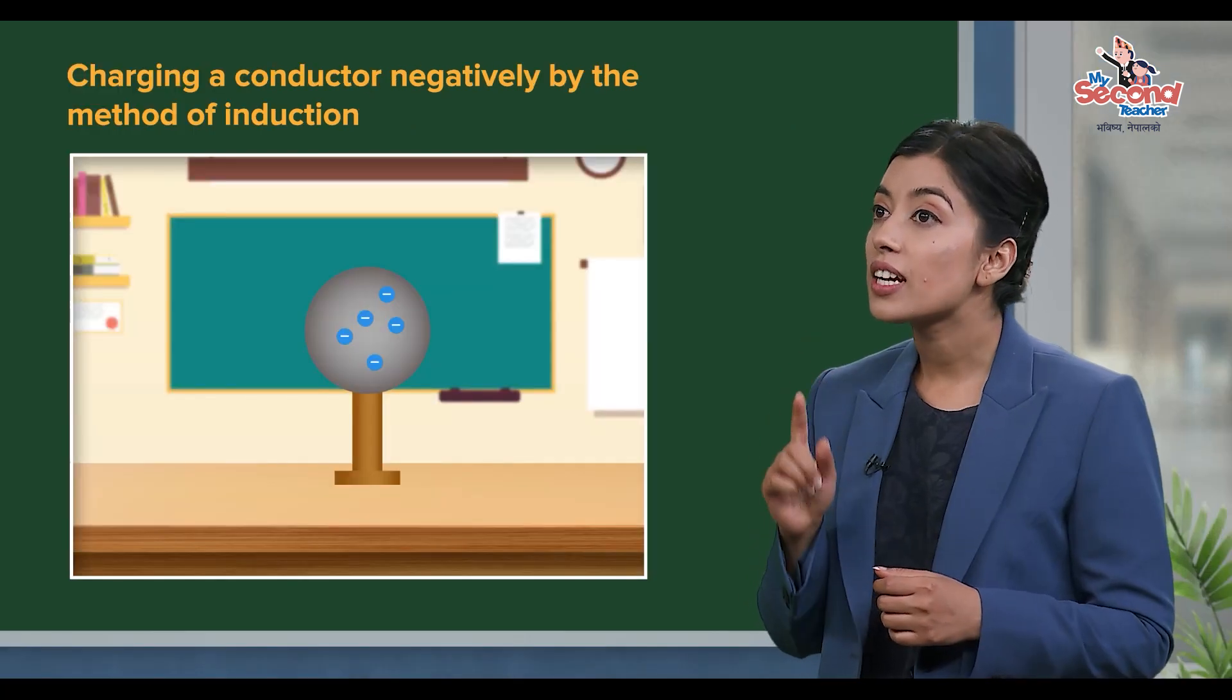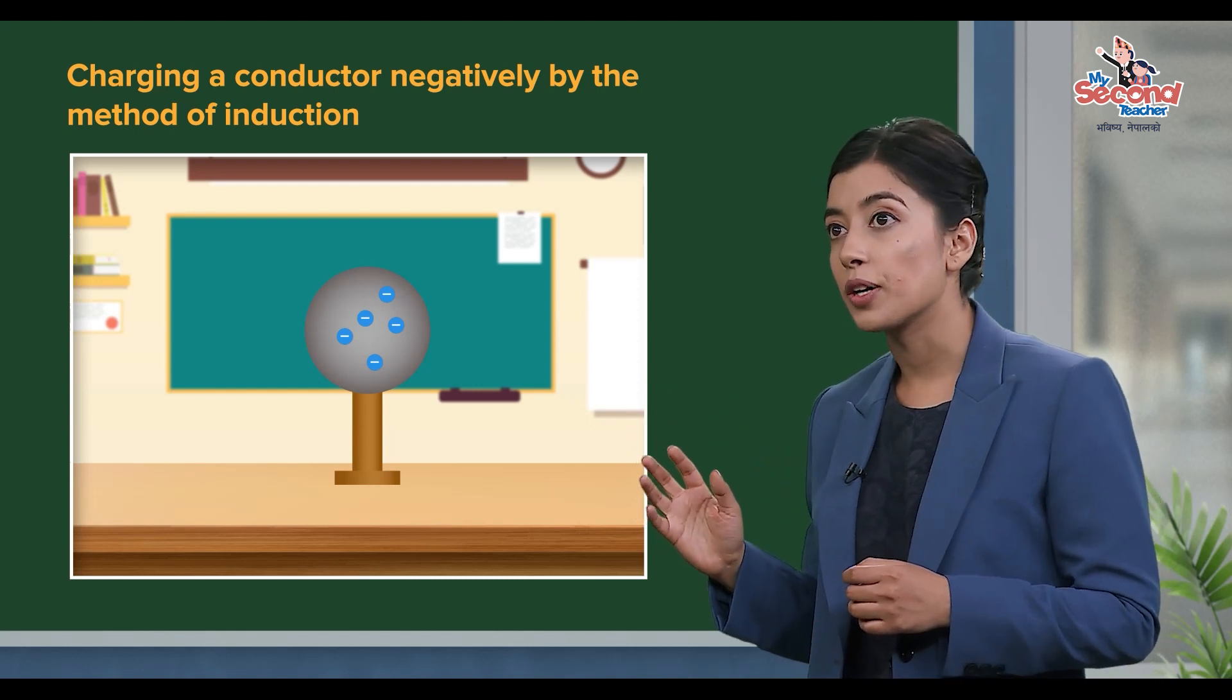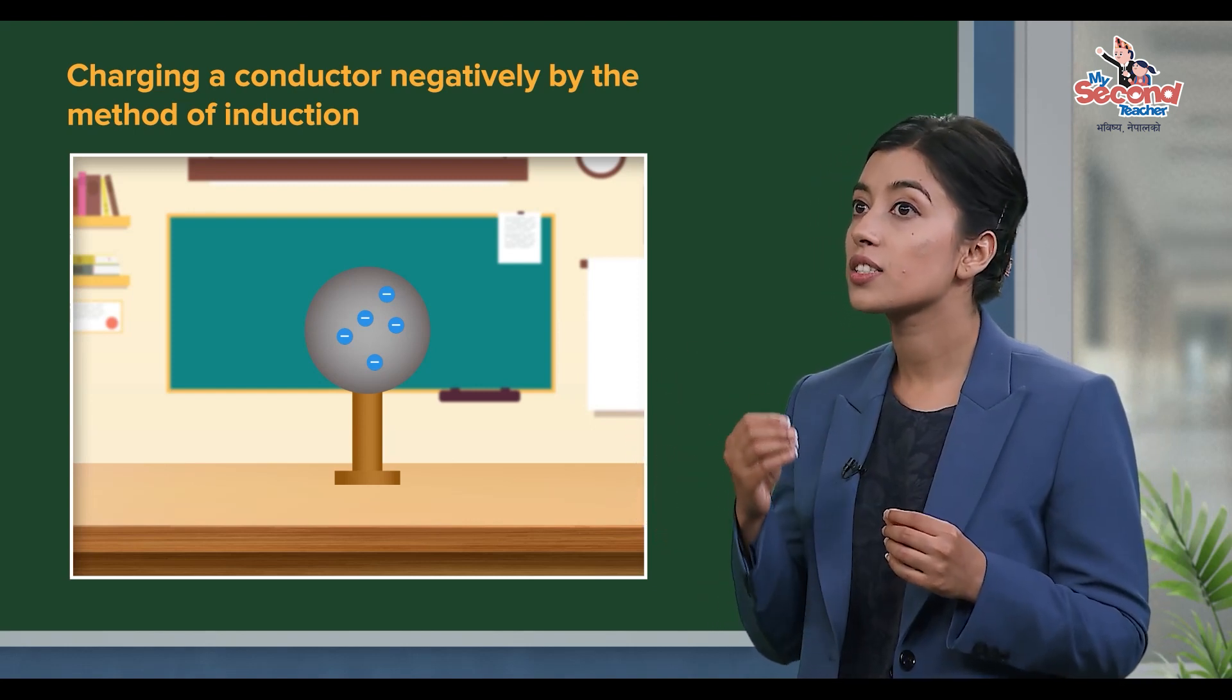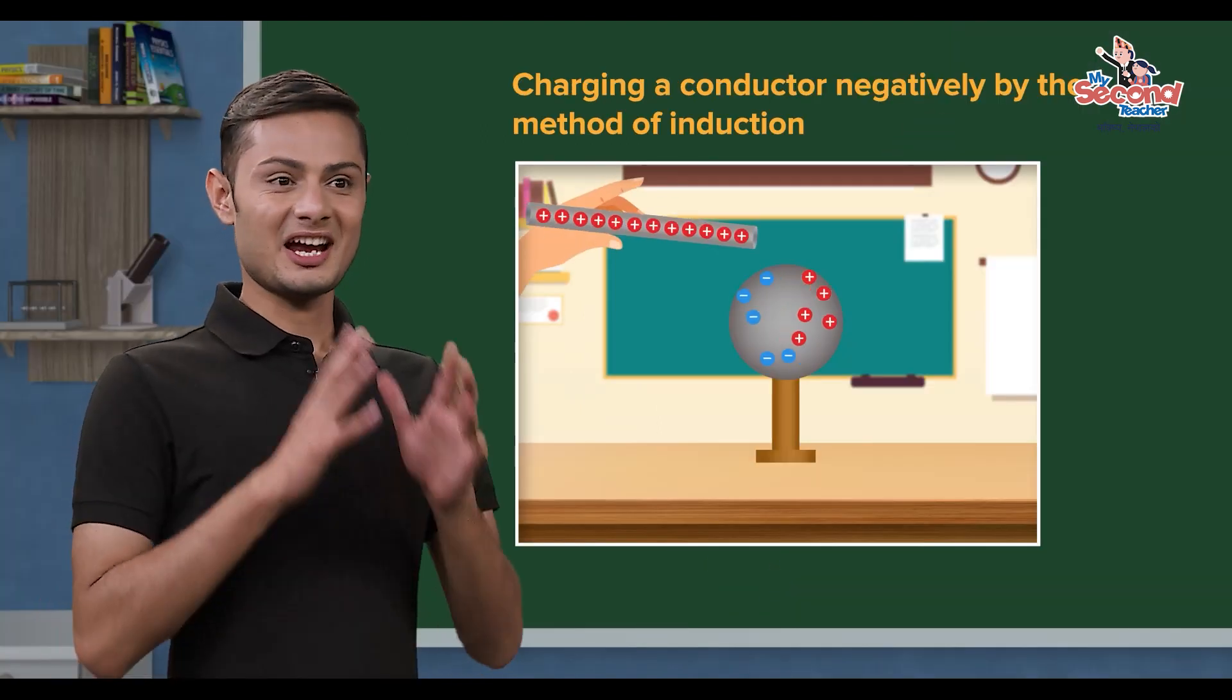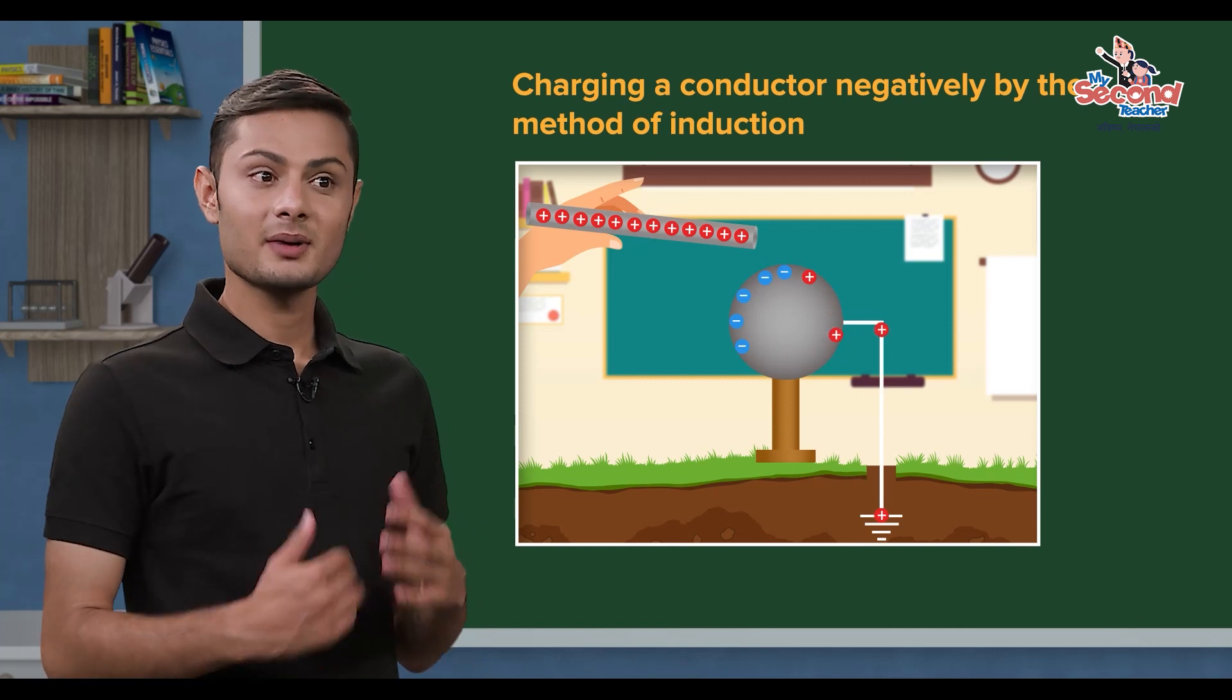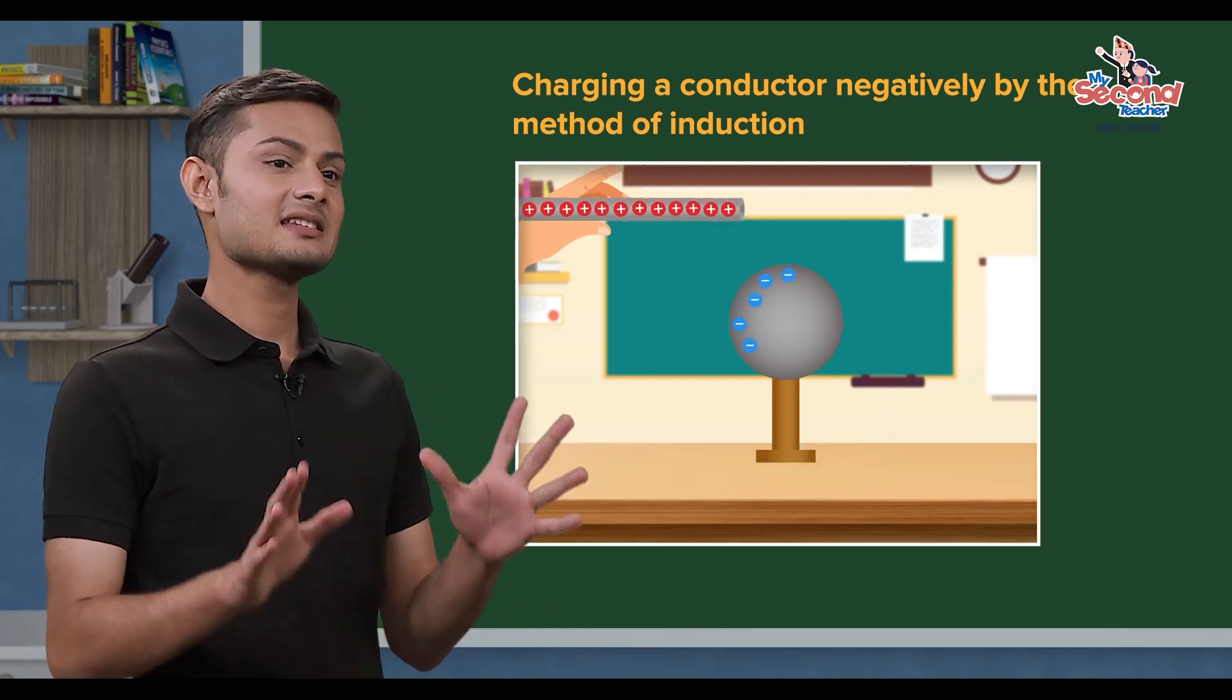And what teacher? Uncharged conductor negatively charged boy ko by this method: charging a conductor negatively by the method of induction. Charging a conductor negatively by the method of induction.